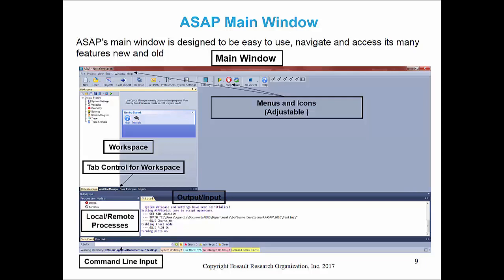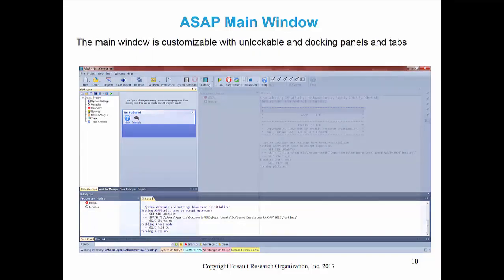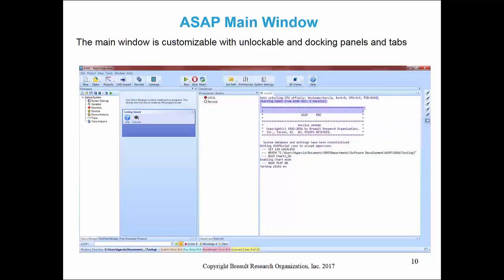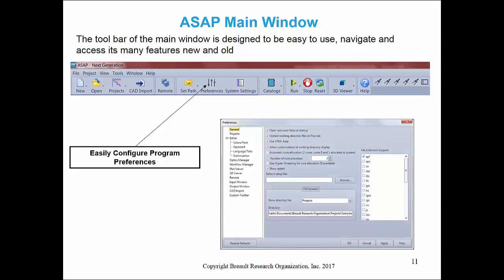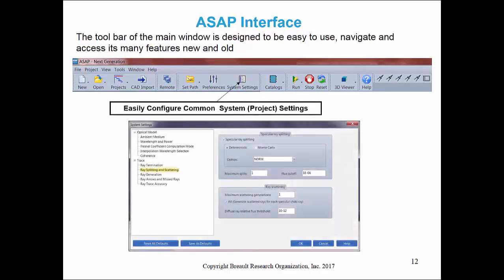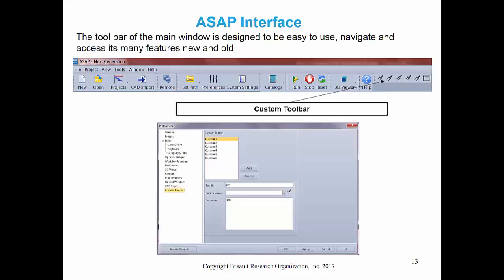The command line input allows you to input ASAP commands directly into the interface and kernel. The text output window displays all numerical results of ASAP's calculations. The status bar is a visual indication of important system-level parameters, and the results area displays a variety of files, plots, and simulation results. The new main window is customizable with undockable and docking panels and tabs, and the toolbar is designed to be easy to use, with customizable icon positioning and useful icons for configuring program preferences.